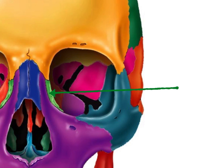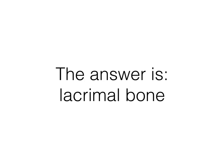On this one, I just want to know the name of the bone — the green one. That's the lacrimal bone. Just remember that lacrimate means to cry.